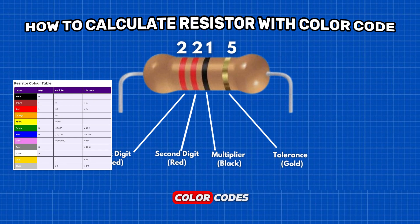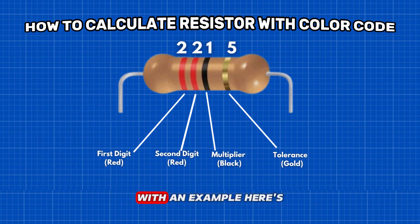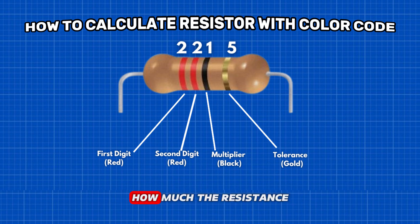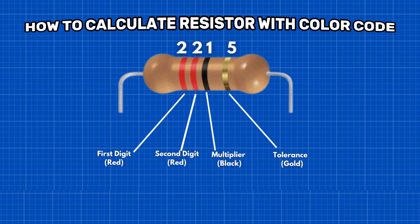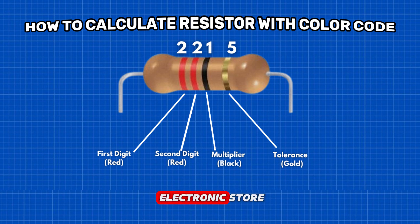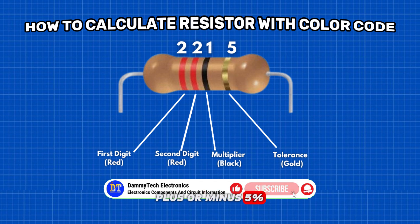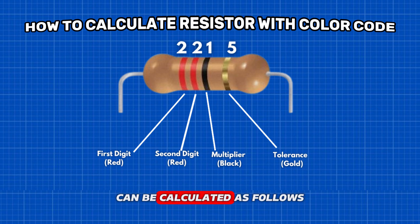After learning about resistance color codes, let us learn how to find resistor color codes with an example. Here's an example to get you started — the band colors for resistor color code in order. The tolerance values represent how much the resistance can vary from its mean value in terms of percentage. A gold band represents the lowest variation. The value of the given resistance is 22 ohms, plus or minus 5%.